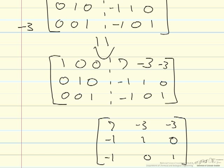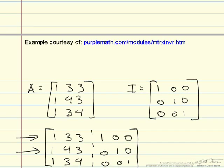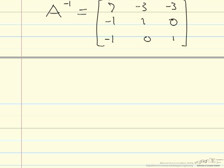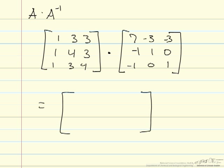One way to test this is to multiply A times A to the inverse, and see if we get back the identity matrix. Now if we step through this, for the first spot here, we multiply the first row here times the first column here. So 7 minus 3 minus 3 minus 3 becomes 1, and then negative 3 plus 3 is 0, and then negative 3 plus 0 plus 3 is 0.